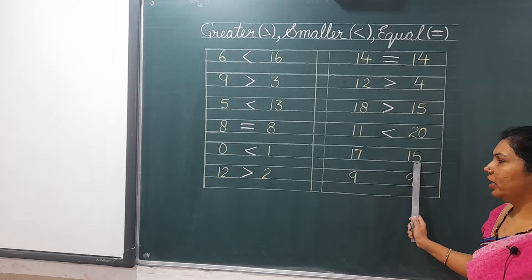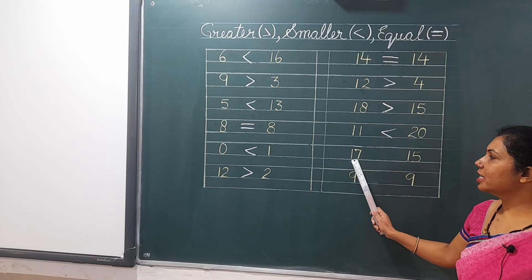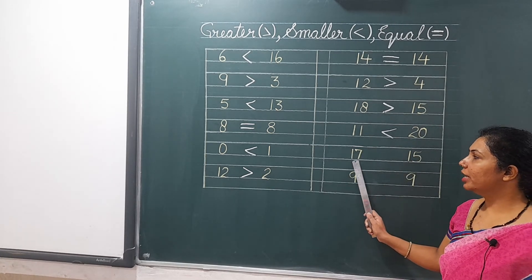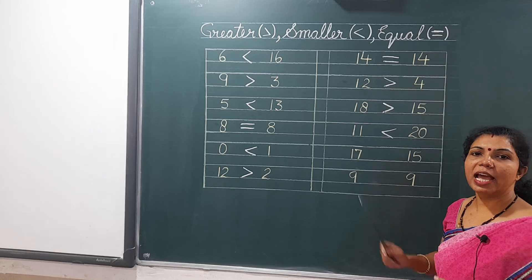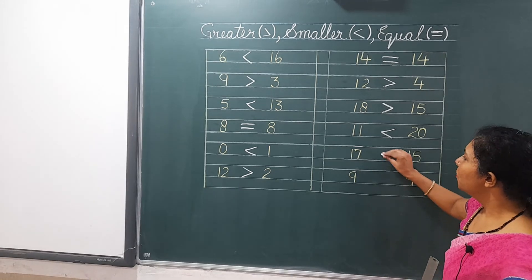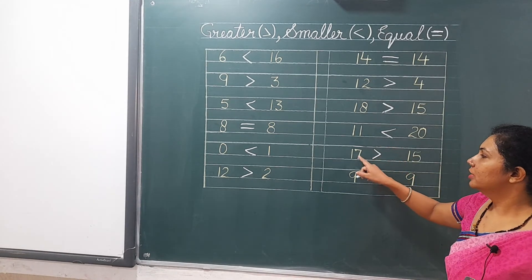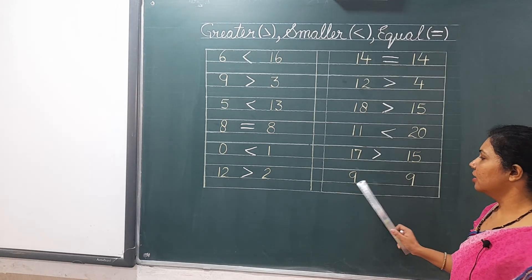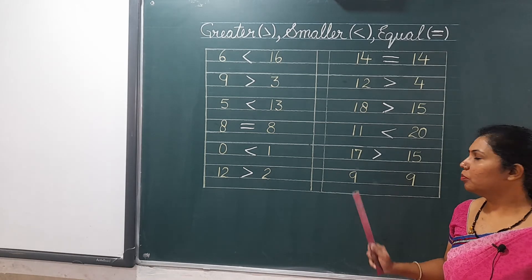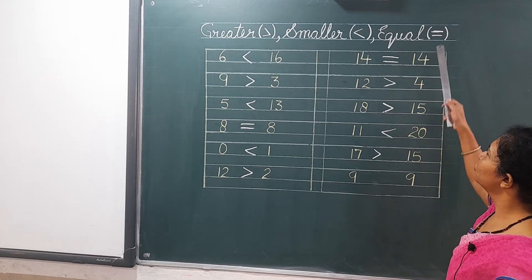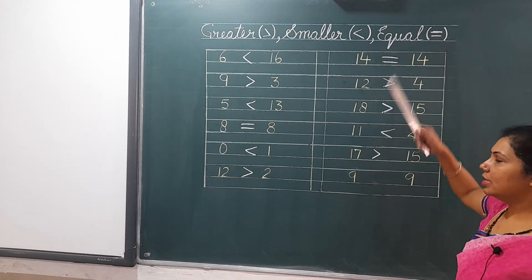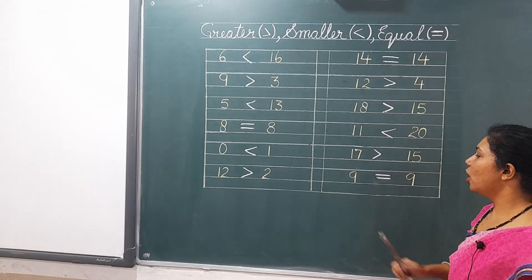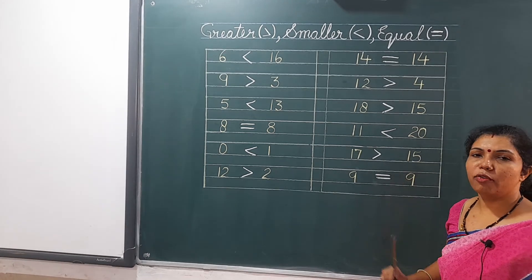Seventeen and fifteen. Seventeen comes after fifteen, so seventeen will be greater than fifteen. The mouth will be open towards seventeen. Nine and nine — both numbers are the same, so we use the equal sign for nine and nine, because both are equal numbers.